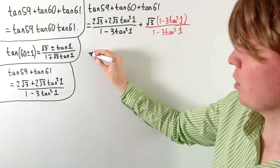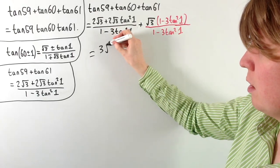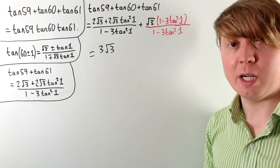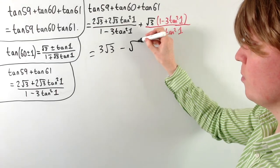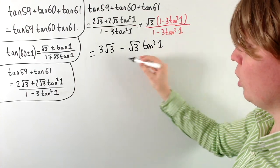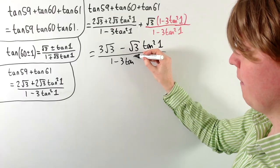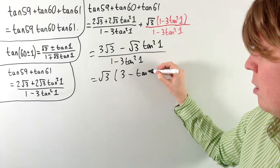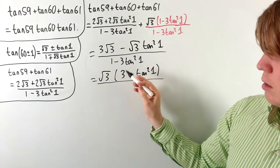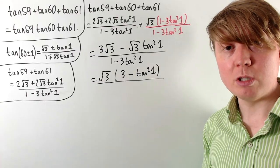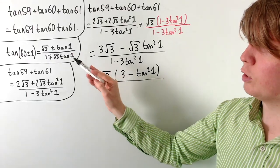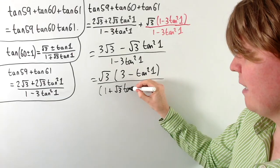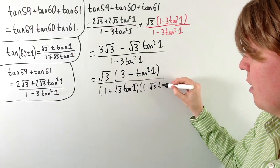Combining the fractions, we get 2√3 + √3 = 3√3 in the numerator from the constant terms, and 2√3·tan²1 − 3√3·tan²1 = −√3·tan²1. So the numerator becomes 3√3 − √3·tan²1, still divided by 1 − 3·tan²1. We then factor the denominator as (1 + √3·tan1)(1 − √3·tan1) using difference of two squares.